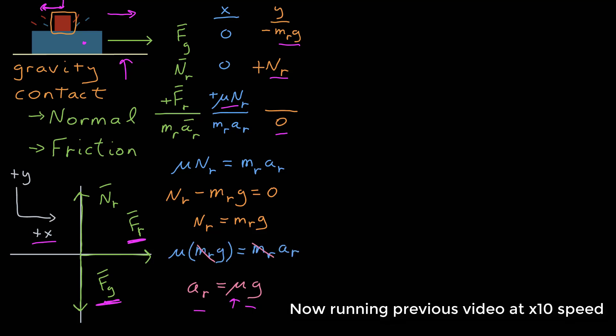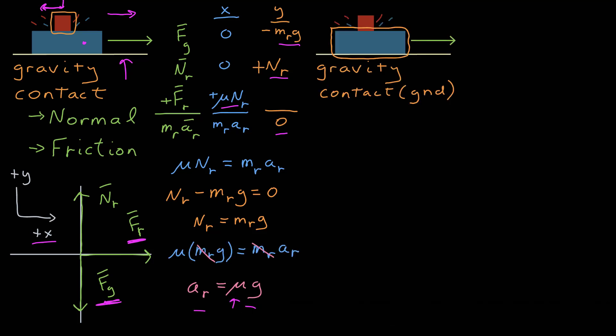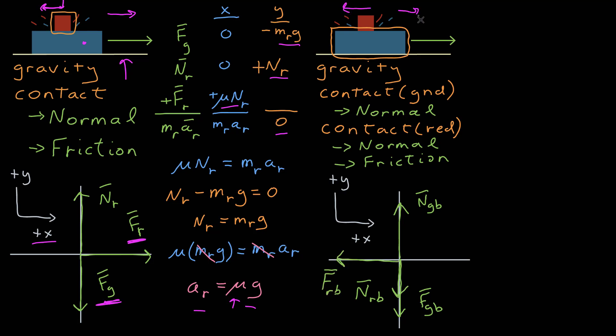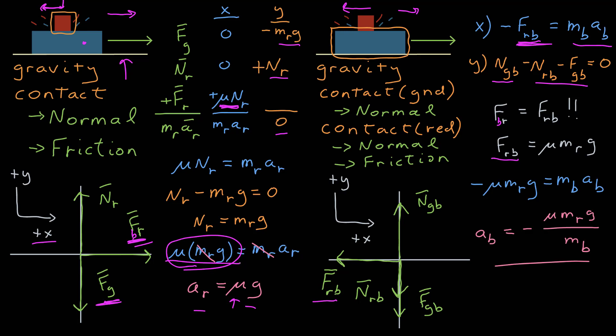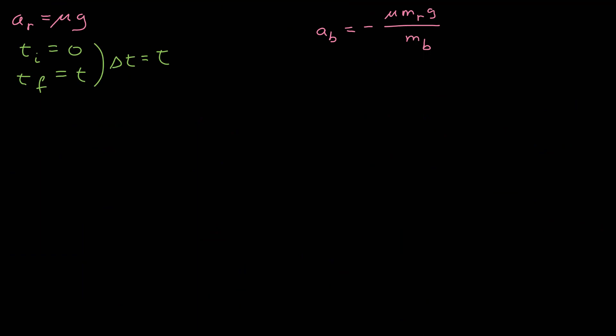...came up with the acceleration, but that wasn't enough. We still had to look at the second block, again, identify all the forces, free body diagram. Identify the coordinate system, where was the frictional force. We related the Newton's third law force pairs between the frictional forces, and that helped us out on the direction. We had to do Newton's second law, both dimensions, to come up with what was going on. Identify the Newton's third law force pairs to relate the two to come up with a second acceleration for the blue block. Of course, the accelerations weren't enough.